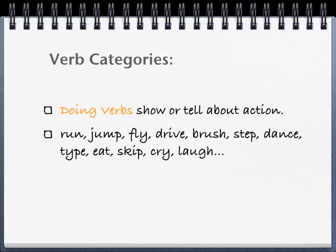Verb categories. The easiest category are the doing verbs, and they show or tell about action. These are the type of verbs that your child will first be introduced to. Words like run, jump, fly, drive, brush, etc.